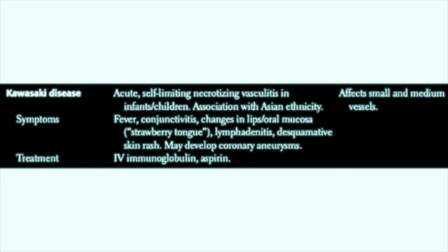Kawasaki patients often have swollen lymphadenitis with painful swelling in the neck, and can develop a desquamative skin rash on the palms, soles, chest, and trunk. The treatment of Kawasaki's disease is intravenous immune globulin, which suppresses the body's natural immune response. These patients are often given aspirin as well — this is one of the few times it's considered safe to give young people aspirin, given concerns about Reye's syndrome.